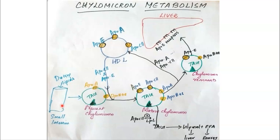To summarize using a diagram: dietary lipids entering the small intestine are converted into nascent chylomicron, containing triacylglycerol and cholesterol along with apolipoproteins ApoA and ApoB48. ApoC2 and ApoE coming from HDL convert nascent chylomicron into mature chylomicron, which contains four apolipoproteins: ApoE, ApoC2, ApoA and ApoB48. ApoC2 activates LPL, and triacylglycerol present in mature chylomicron is converted into glycerol plus free fatty acids. Glycerol enters the liver glycolytic pathway and free fatty acids are used for energy.